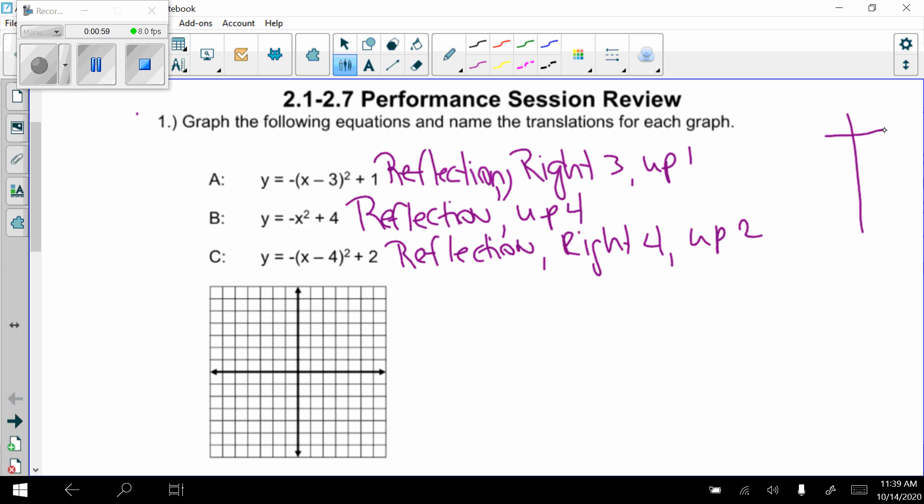Over here, I'll make my table for my parent function, x squared, so negative 2, negative 1, 0, 1, and 2. So I know this is 4, 1, 0, 1, and 4.